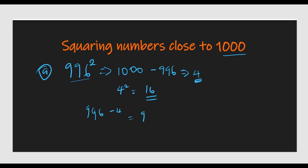Then we say 996 minus 4, which gives you 992. Since this is in the thousands, we add a zero placeholder, giving us 992016 as the answer. It's not because we multiplied 996 by 996, but because we know the logic: the difference from 1000 is 4, so the last part is 16, and 996 minus 4 is 992.